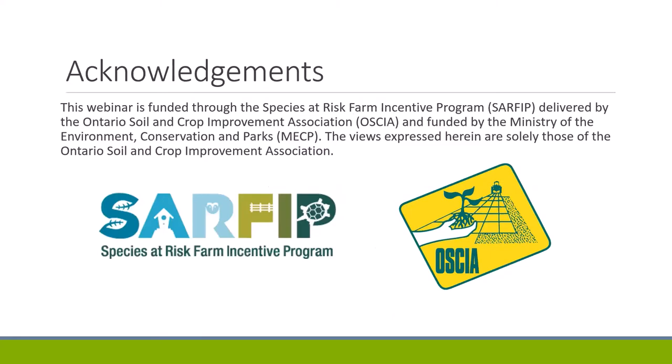This webinar is provided through the Species at Risk Farm Incentive Program, which is delivered by the Ontario Soil and Crop Improvement Association. This program provides cost-share opportunities for Ontario farmers to implement best management practices on their farms in order to protect species at risk, and the program is funded by the Ministry of the Environment, Conservation and Parks. Blazing Star Environmental was hired as the species experts to develop and present this material, and is also the lead author of the best management practices document.